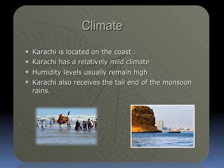Regarding climate, Karachi is located on the coast and has a relatively mild climate. Humidity levels usually remain high. Karachi also receives the tail end of the monsoon rains.